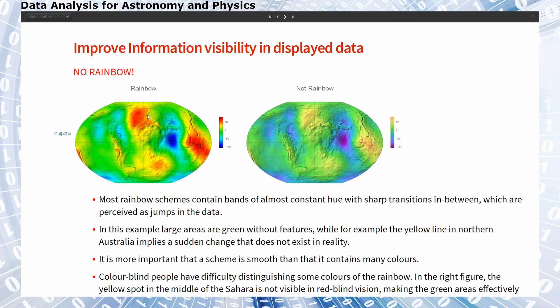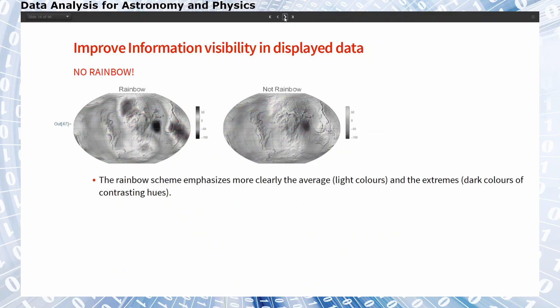It is also sometimes difficult for color blind people to distinguish some of the colors here in the rainbow, which is why it is recommended not to use the rainbow color scale.